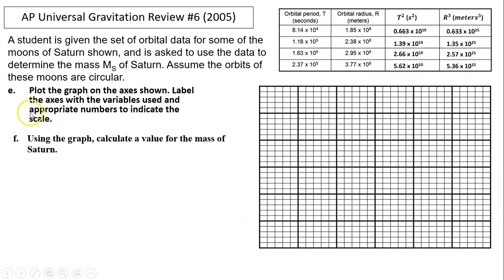Next part is plot the graph on the axis shown. Label the axis with variables used and appropriate numbers to indicate scale. We're going to graph t² and r³, because t² is directly related to r³. From this graph, we can use the slope to find Ms. So the vertical would be t², and the horizontal would be r³. But t² times 10¹⁰, because we don't want to write 10¹⁰ for every number. Multiply 10²⁵ for r³, and the label for t² multiply 10¹⁰.